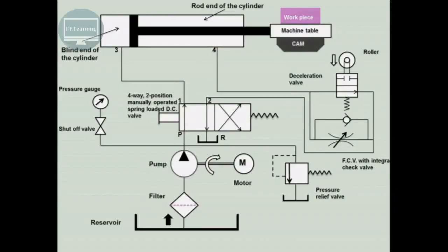This is a normally open type deceleration valve connected in parallel. You can see the deceleration valve is connected in parallel with the meter-out flow control valve, which is integral with the check valve. This type of circuit is used to control the motion of a machine table. The machine table movement is decelerated at certain points while work is performed on the workpiece, so we want reduced speed during machining.